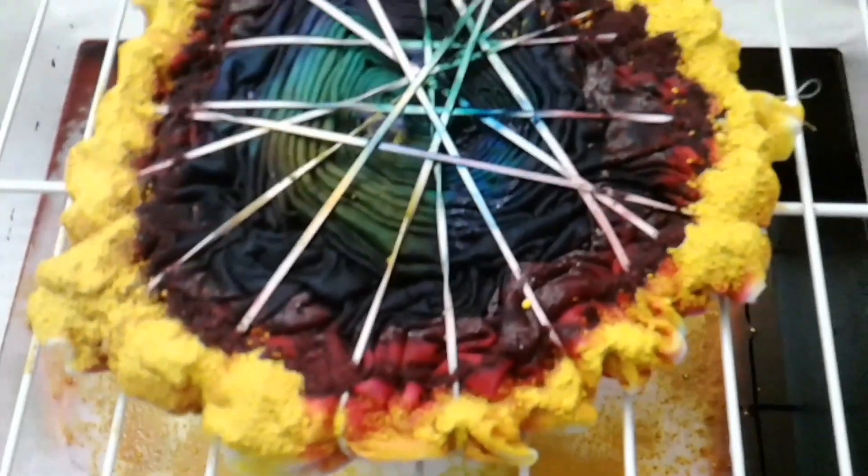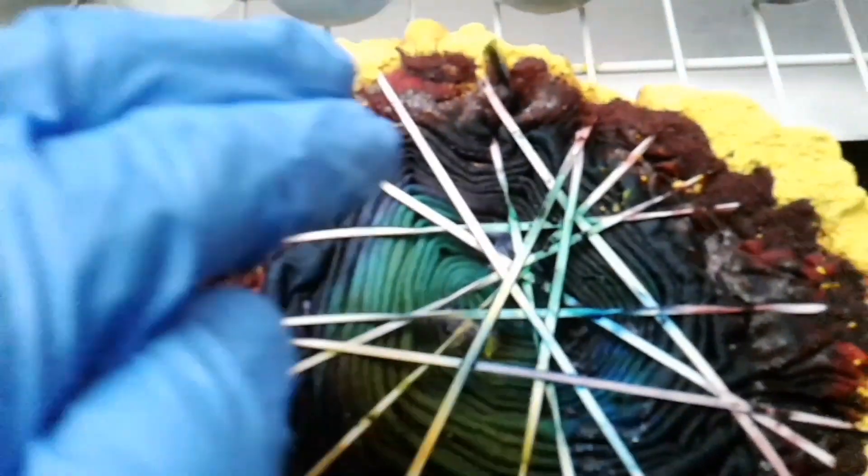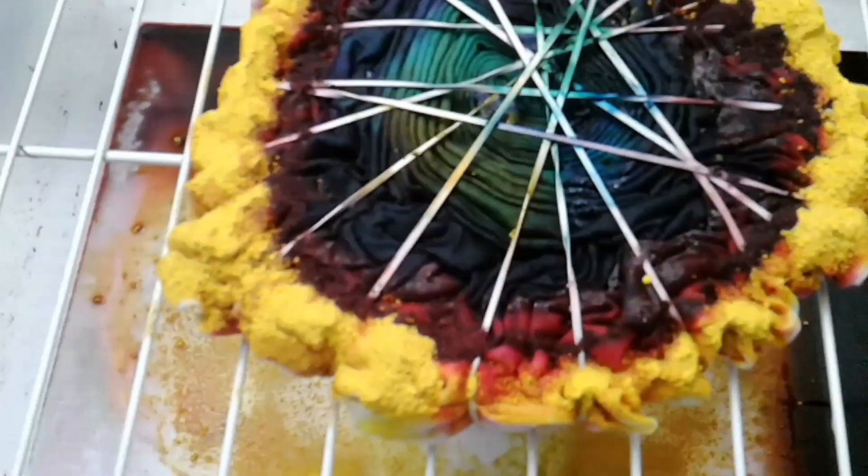So I got the lemon yellow laid down. Put it fairly heavy on there because it's going to dissipate since it's a light color. And we'll just start adding the hot water.